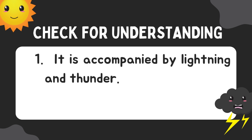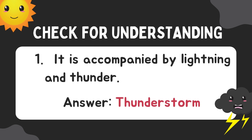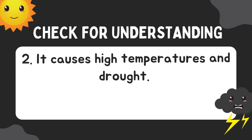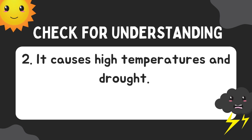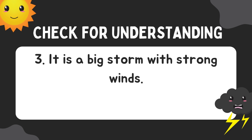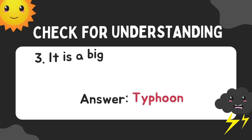Let's check your understanding. Identify what is being asked. 1. It is accompanied by lightning and thunder. Answer: thunderstorms. 2. It causes high temperatures and drought. Answer: El Niño. 3. It is a big storm with strong winds. Answer: typhoon.